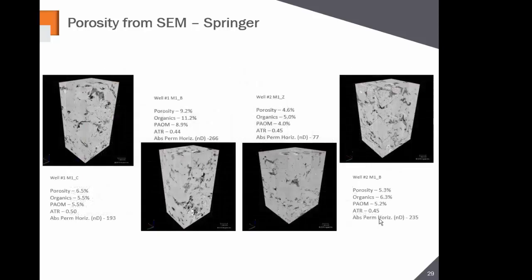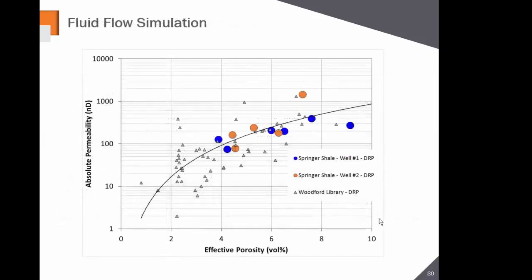Building a regression model and comparing to the Woodford library, the Springer shale comes in on the higher end — higher end of porosities for Woodfords and higher end of permeabilities. That's a good thing. If you're an operator with held-by-production Springer allocated to your name because you're drilling the Woodford, this is additional reserves you can book and actually complete. And it's accessible, it's permeable, it's connected — which is key.